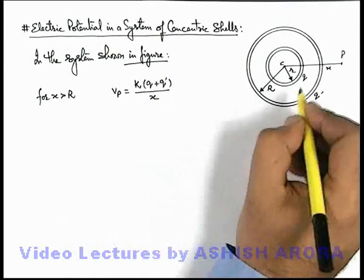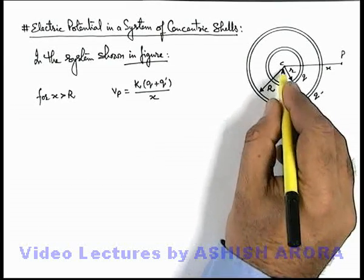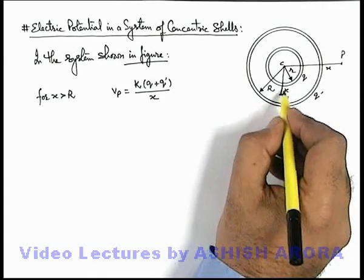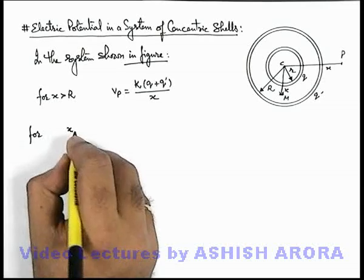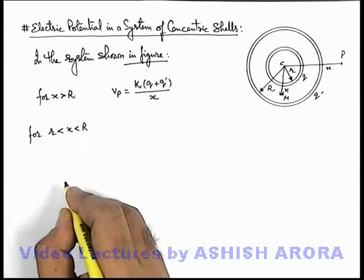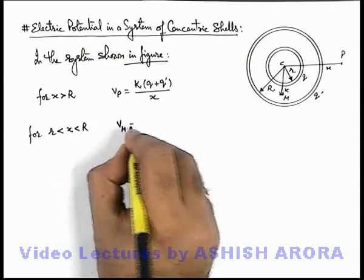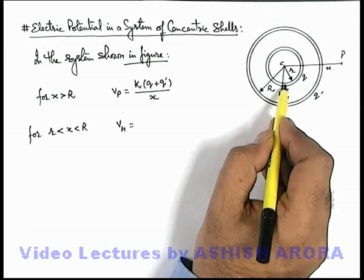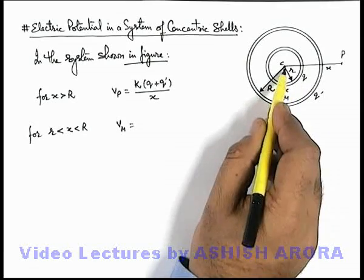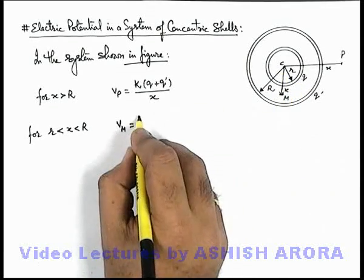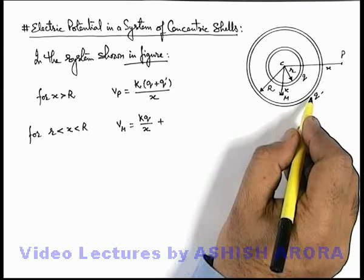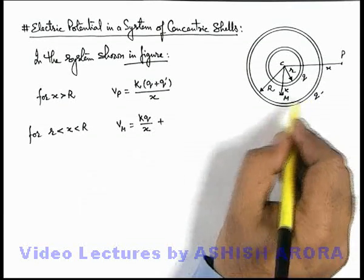Now if we find the potential at a point located between the two shells, again at a distance x — say this is point M, located at a distance x from the centre such that small r < x < capital R. Due to charge q, point M is an outer point, so q appears to be concentrated at the centre. Potential at M due to q is given by kq / x.